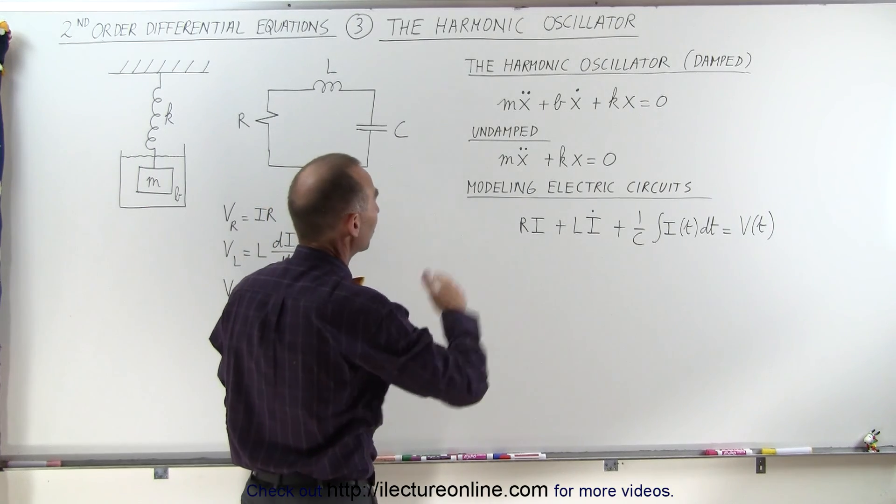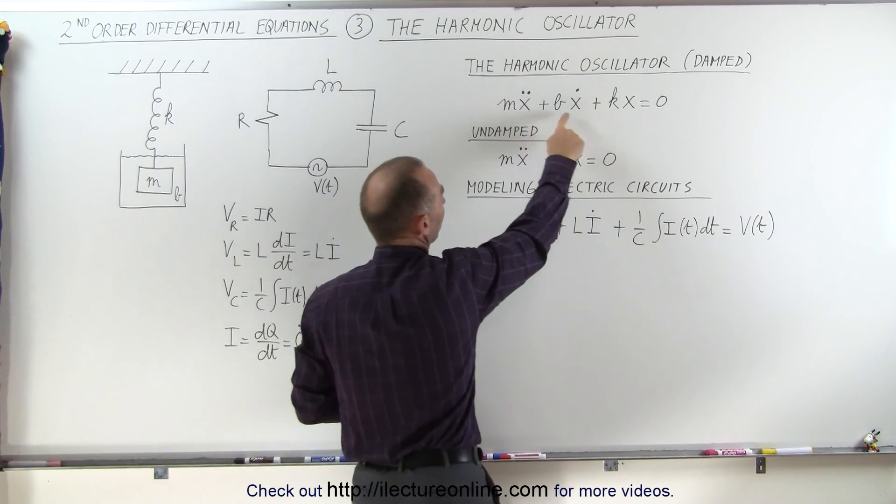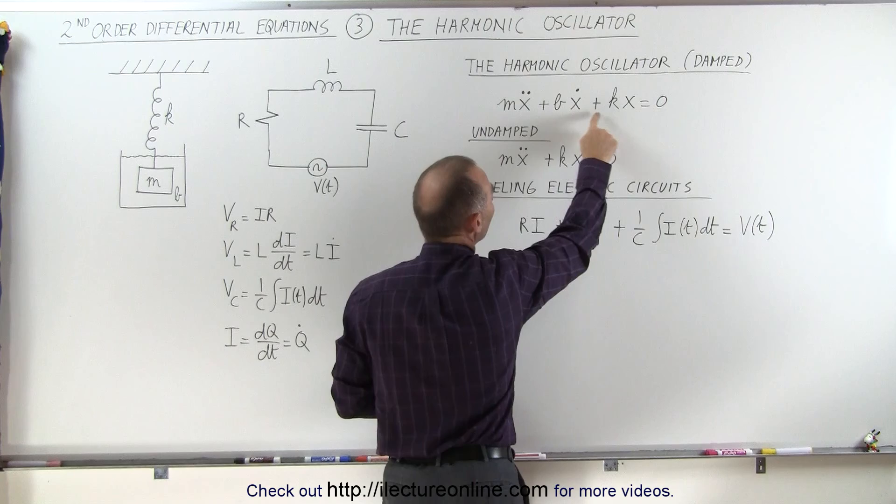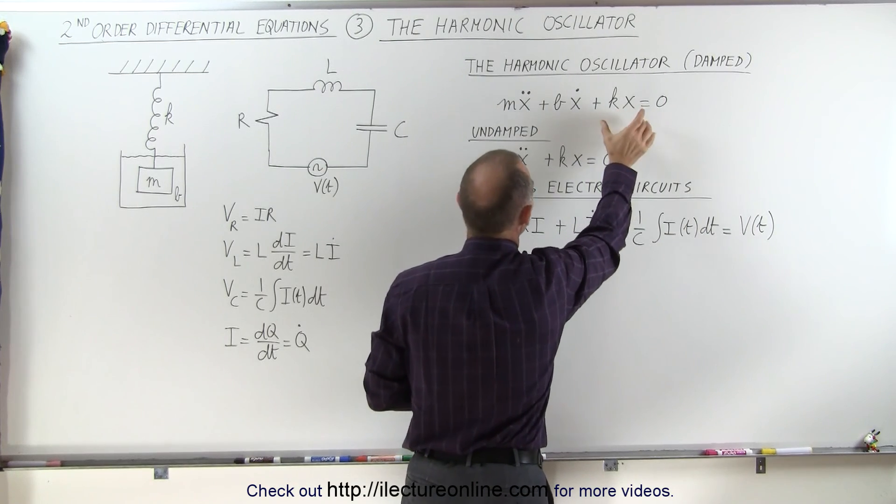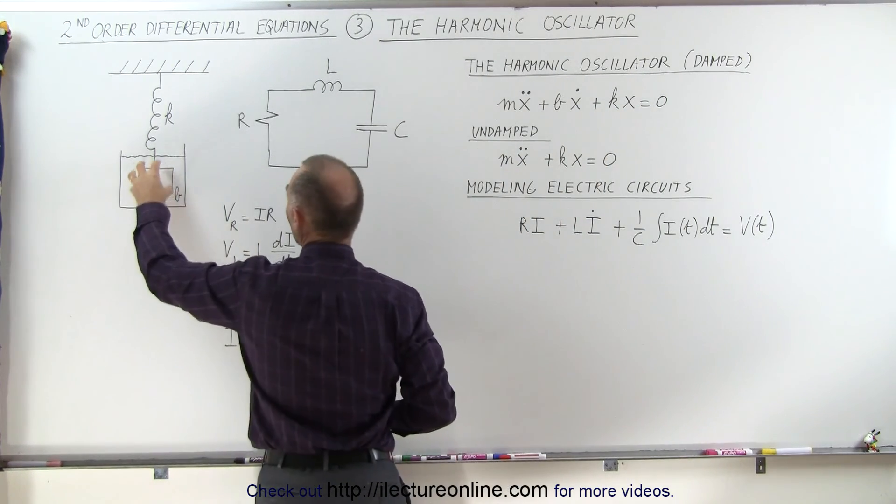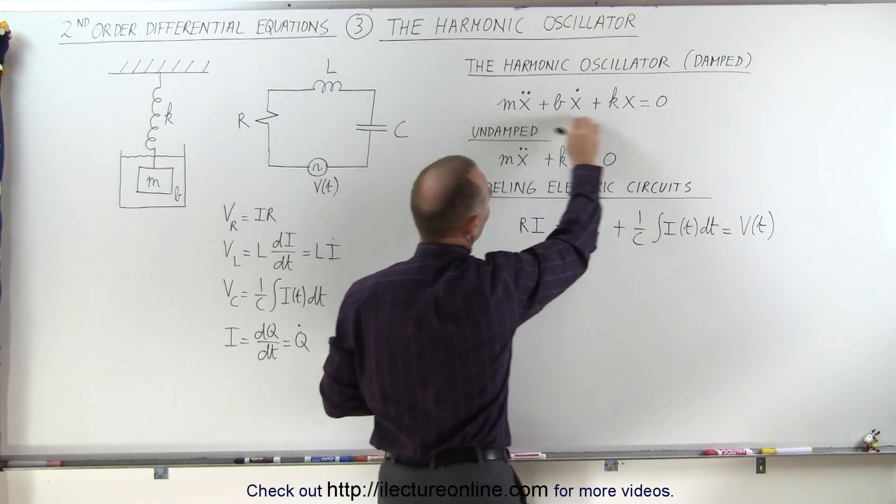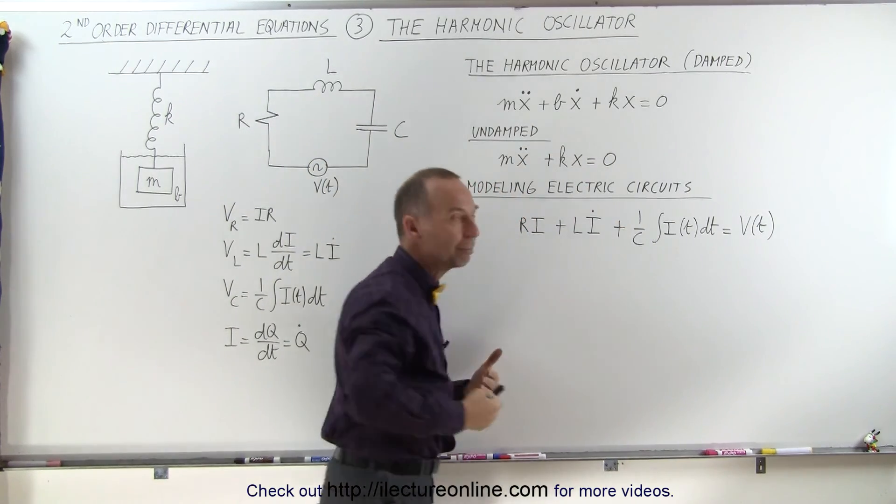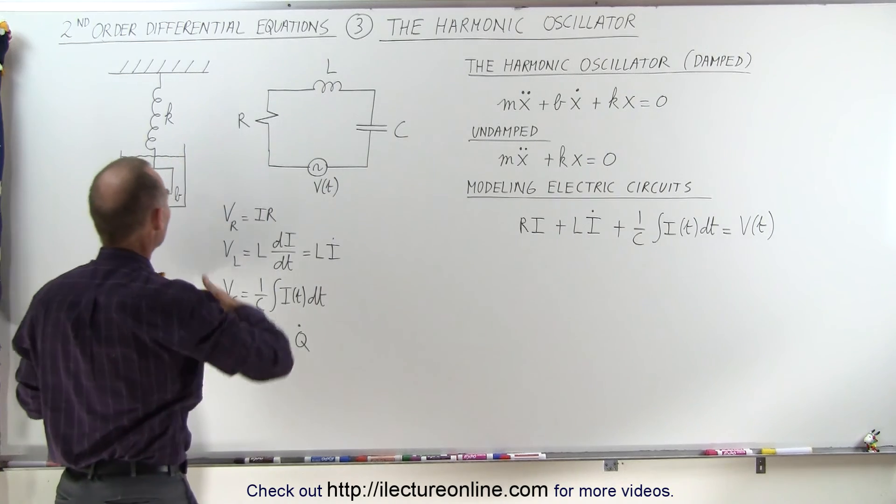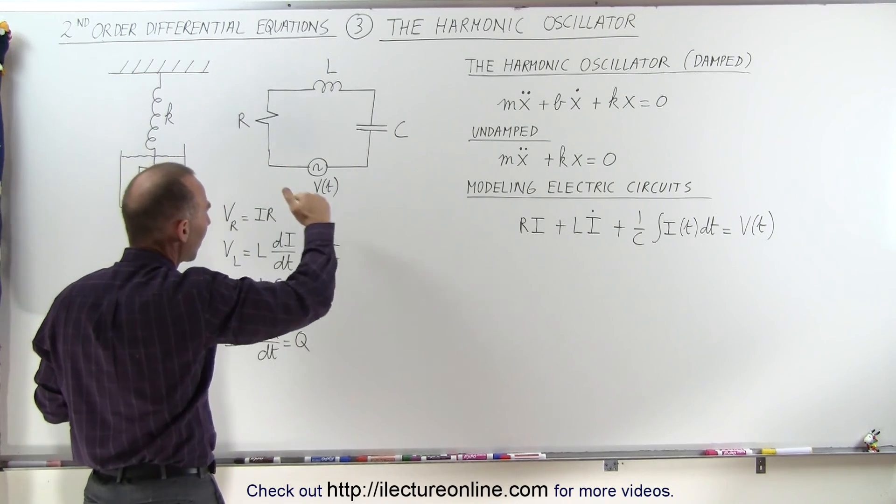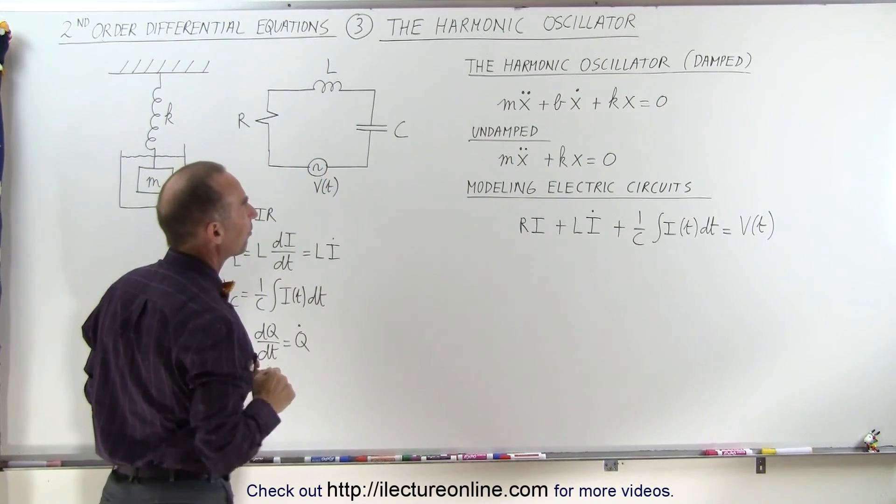Or maybe some viscous fluid through which it has to travel, which is a function of the velocity, plus the kx, which is the force that acts on the object because of the spring. We set all that to zero, and we can see that that is simply an oscillating object that will slowly stop oscillating because of the dampening effect.